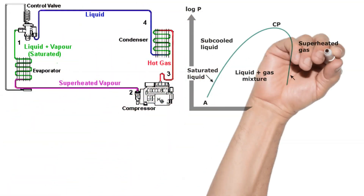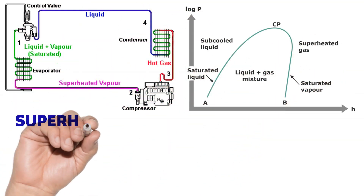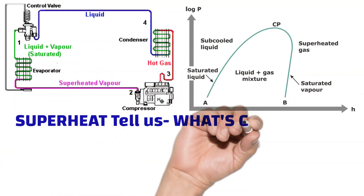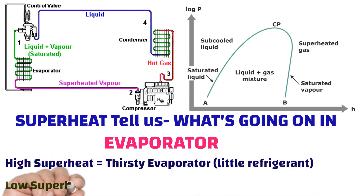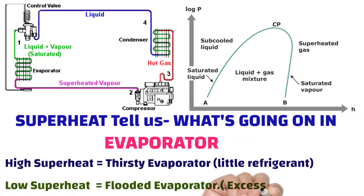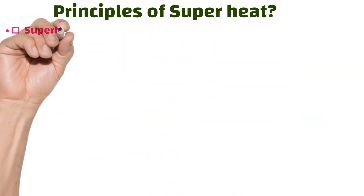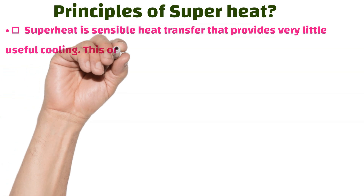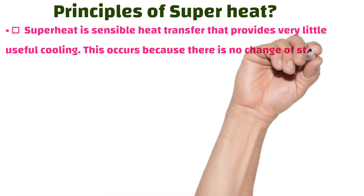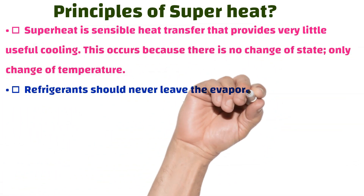Superheat tells us what's going on in an evaporator. High superheat equals a thirsty evaporator, which means little refrigerant in the system. Low superheat equals a flooded evaporator, which means excessive refrigerant.